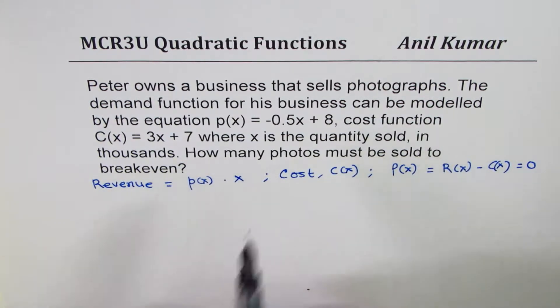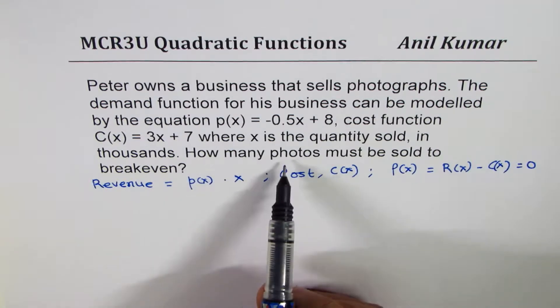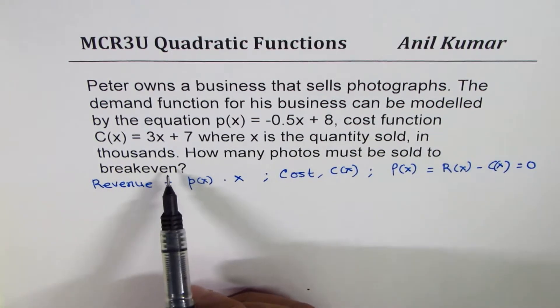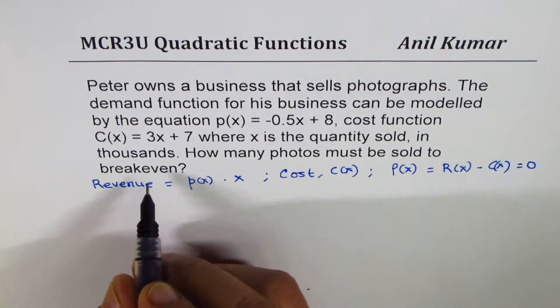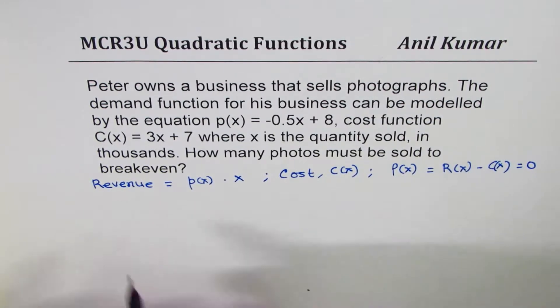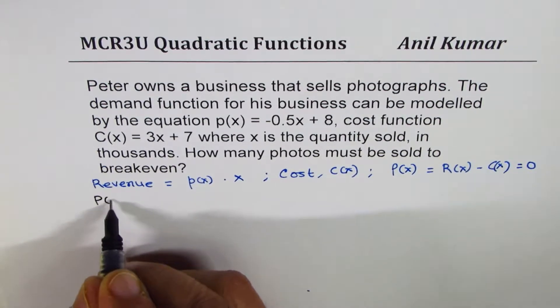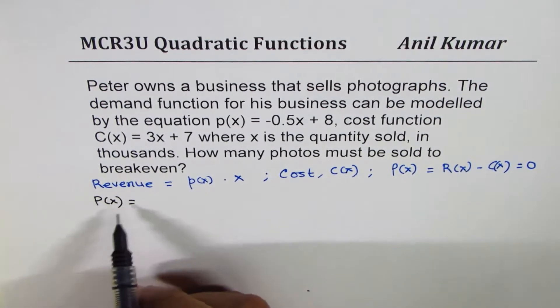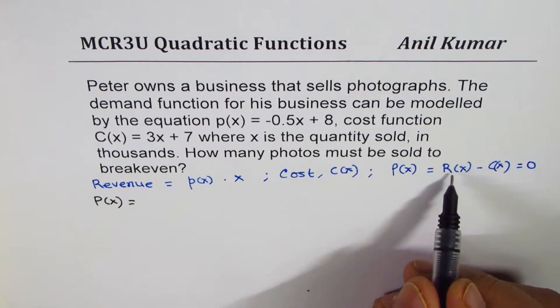Now let's start answering the question. How many photos must be sold to break even? That is to say, at break even profit is going to be zero. So we are looking for profit to be zero. And as I said, profit is difference of revenue and cost.